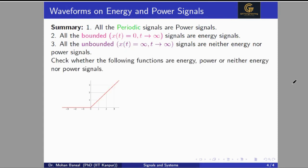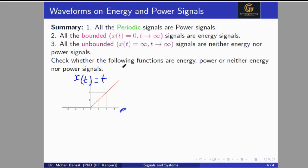Now we will visualize some example signals to check whether each is a power signal, energy signal, or neither. The first signal is continuously growing towards infinity. If we check at t equal to infinity, the function value will be infinite — this function is x(t) = t. So this signal is neither energy nor power signal, because at t equal to infinity we get an infinite value.